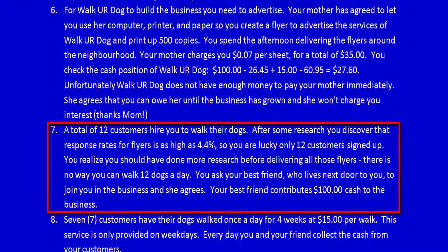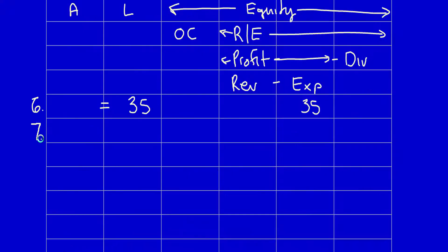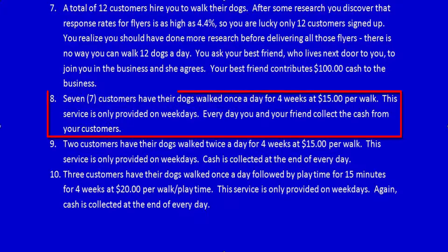You ask your best friend who lives next door to join you in the business, and she agrees. Your best friend contributes $100 cash to the business. What did the business get? Cash, which is an asset because it has future economic benefit — assets increase $100. What did the business give away? The business gave away more of the ownership, a slice of the pie, so owner's capital increases by $100. The equal sign is working perfectly.